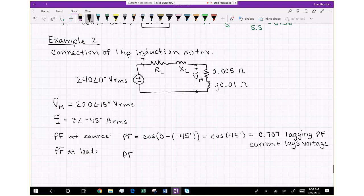How about at the load? Well at the load the voltage is different. Vm is the voltage at the load, the current is the same, voltage is different. That voltage, the phase angle is negative 15 degrees, and then minus the phase angle of the current which is negative 45 degrees. That's going to be square root of 3 over 2, and that's 0.866. But that's still a lagging power factor.